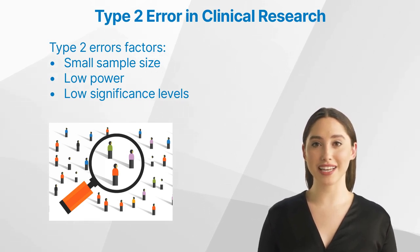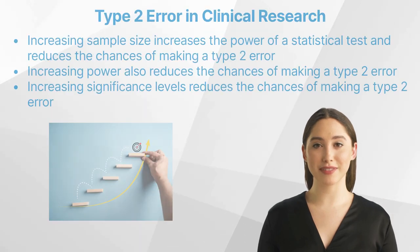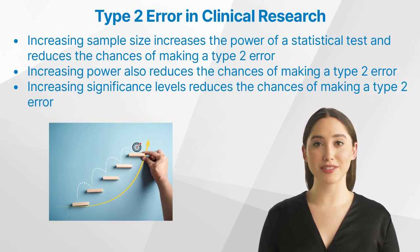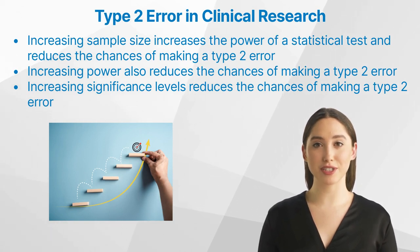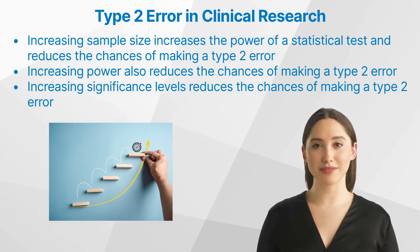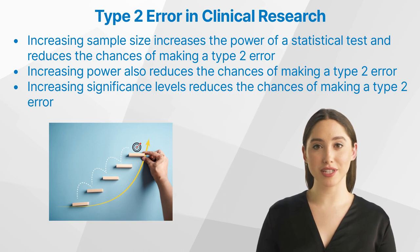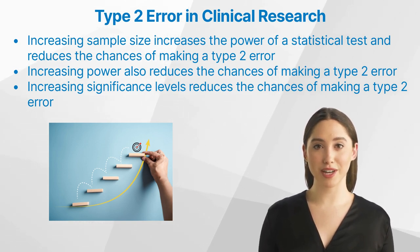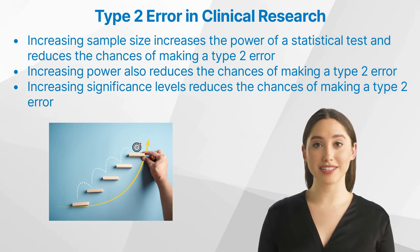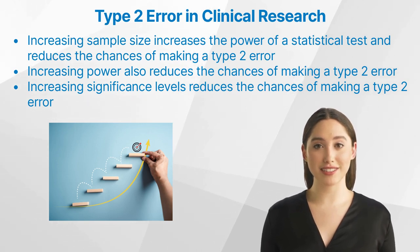How to avoid Type 2 errors: researchers should take steps to increase sample size and increase power. Increasing sample size increases the power of a statistical test and reduces the chances of making a Type 2 error. Increasing power also reduces the chances of making a Type 2 error. Finally, increasing significance levels reduces the chances of making a Type 2 error.